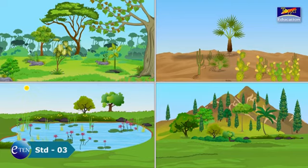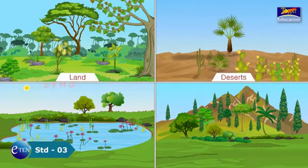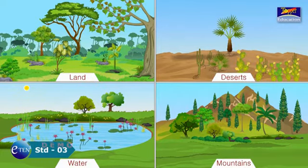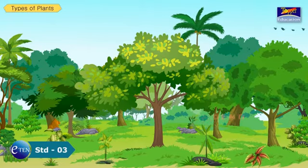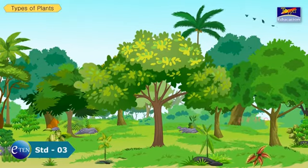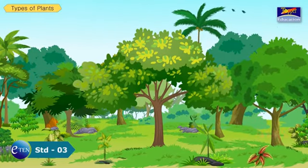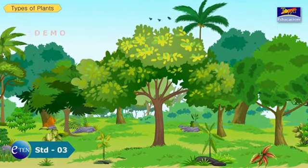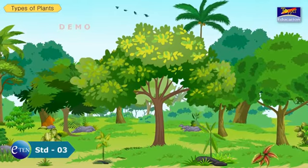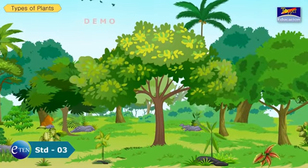Plants can grow on land, in deserts, on mountains and in water. These plants differ in their shape, size and color.